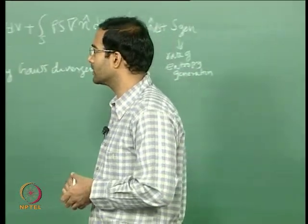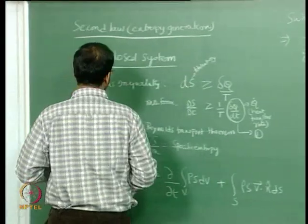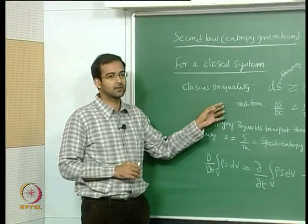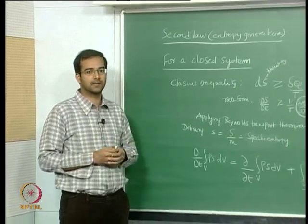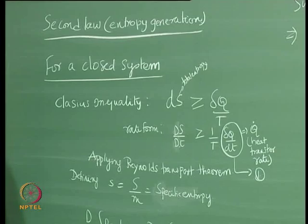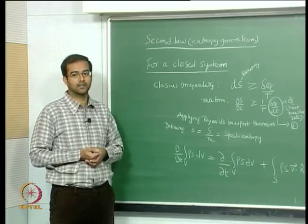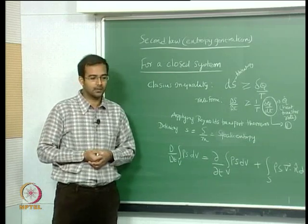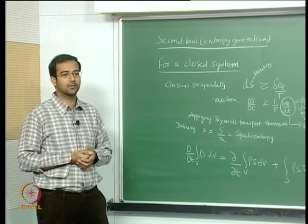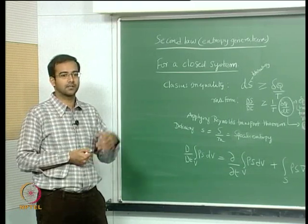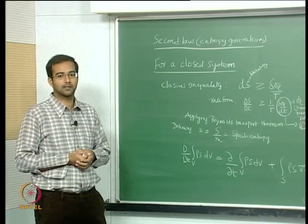We will look at the second law for a closed system. We were till now deriving the conservation equations. We looked at two different approaches: we started from a Cartesian coordinate control volume, and also had a coordinate-free representation applying Reynolds Transport Theorem to a closed system, converting the closed system rate of change of properties to rate of change with respect to an open system.